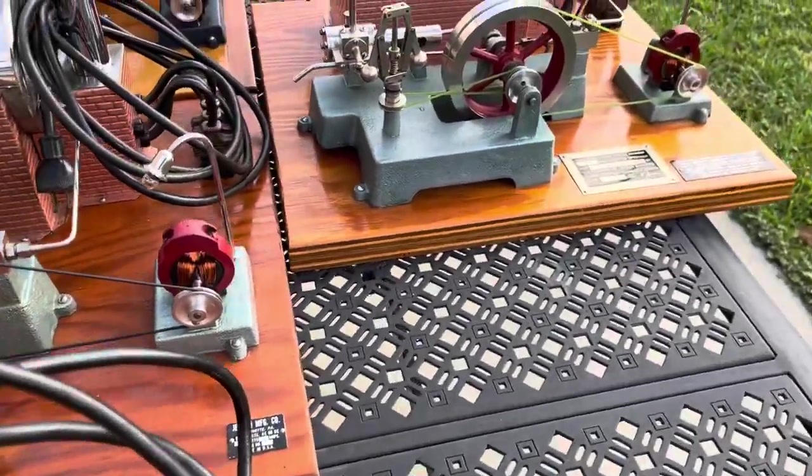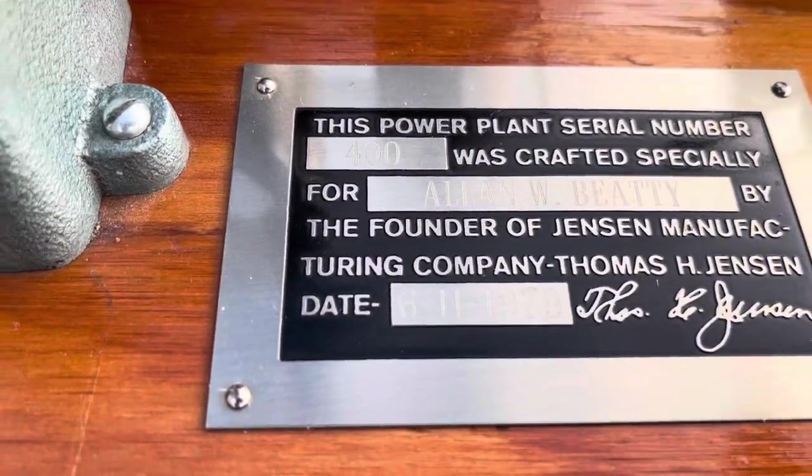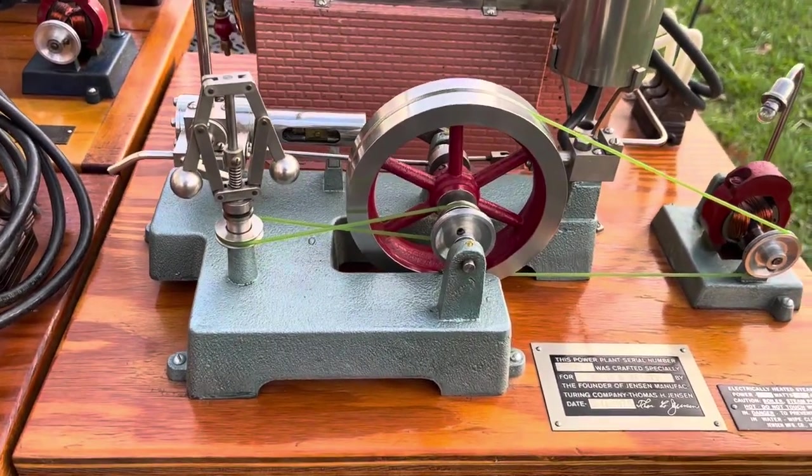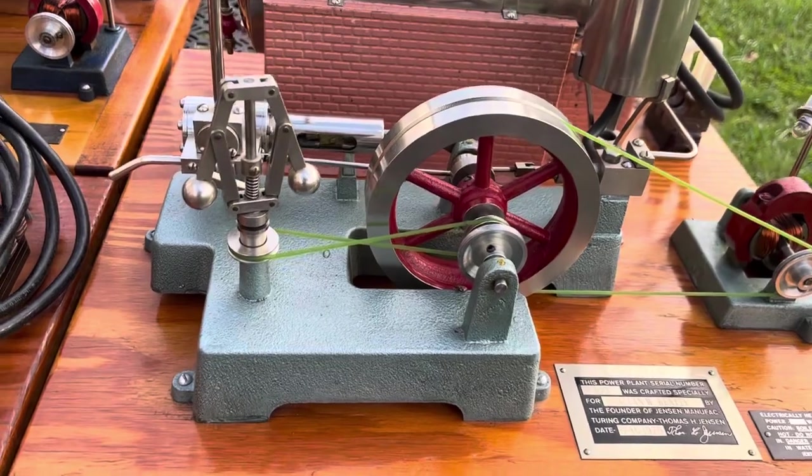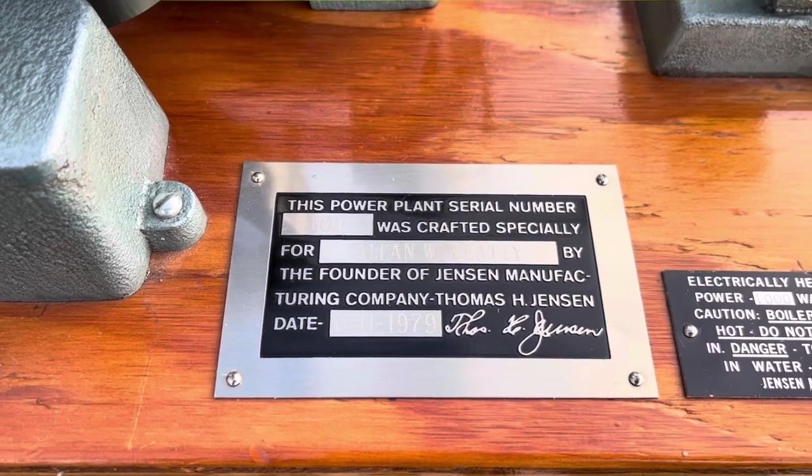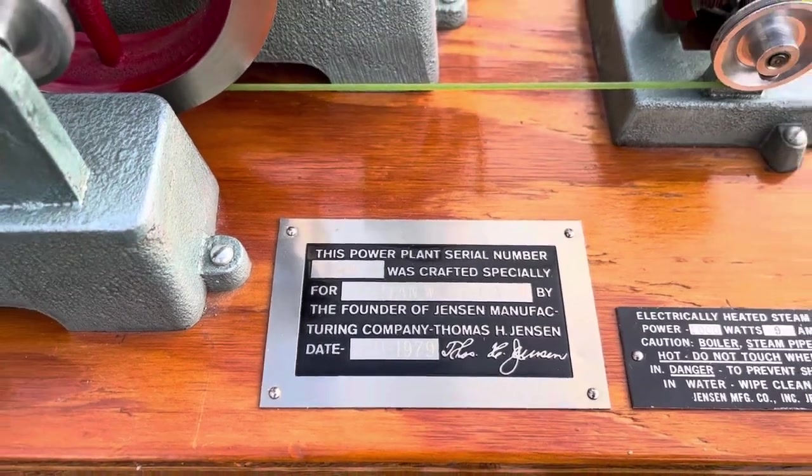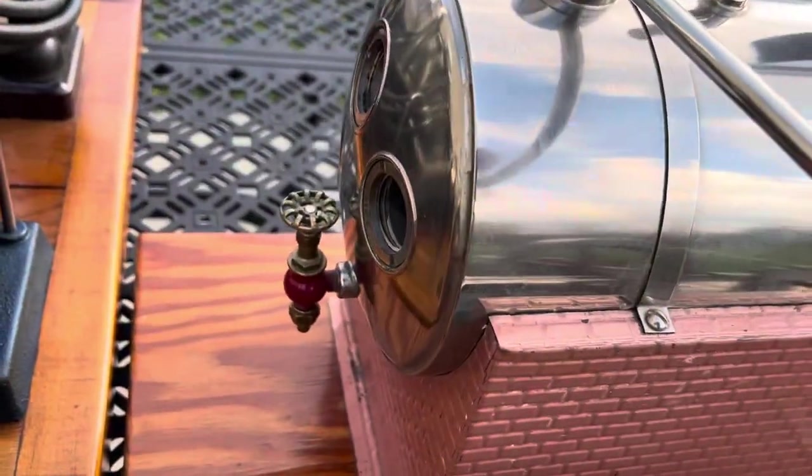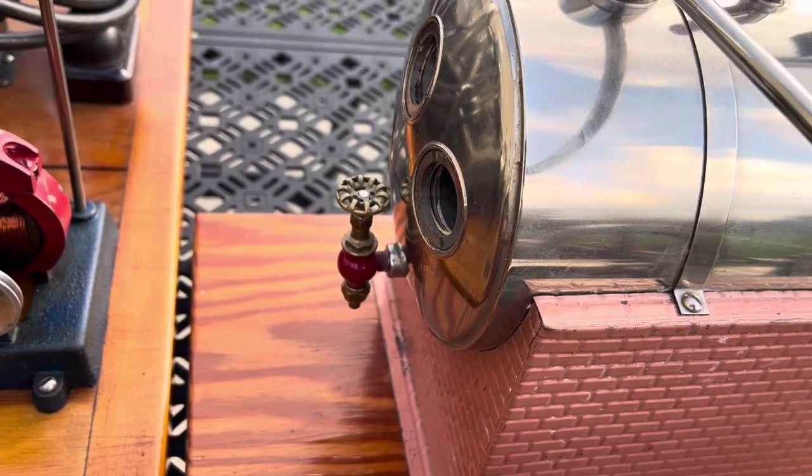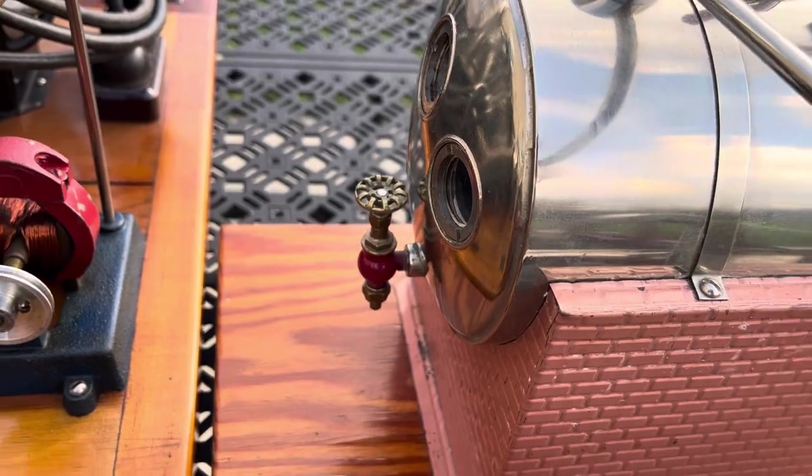And then this last engine here was built on June 11th, 1979. The date is right there on that tag. And it is basically the same as the 1976, except for the addition of this personalized tag for the original owner. And of course, this has a boiler drain valve that is not correct. I ordered a new one from Jensen Manufacturing almost seven years ago. And apparently, I'm never going to get one.